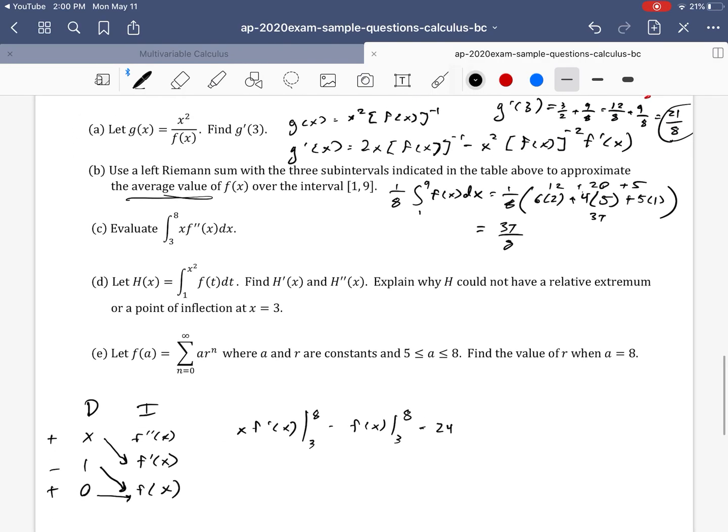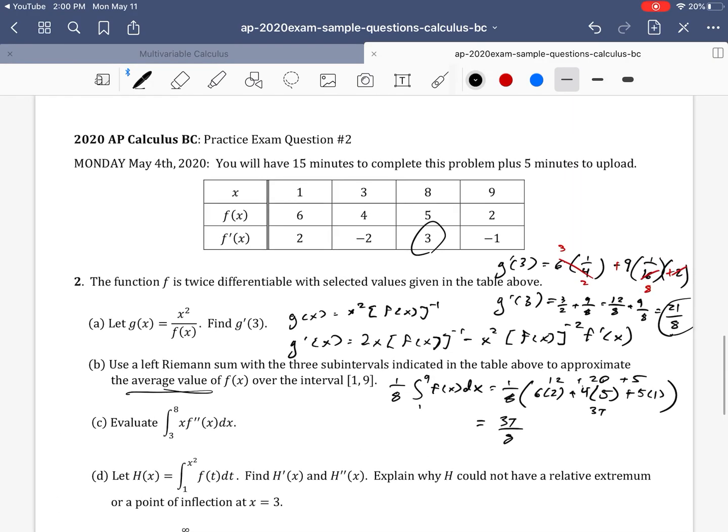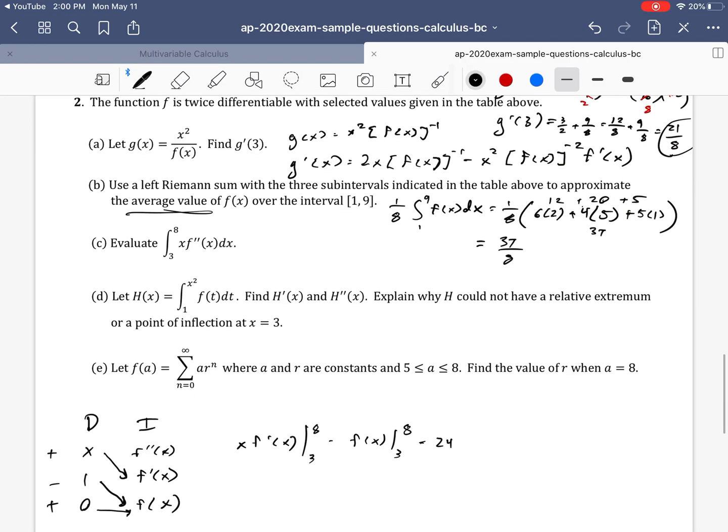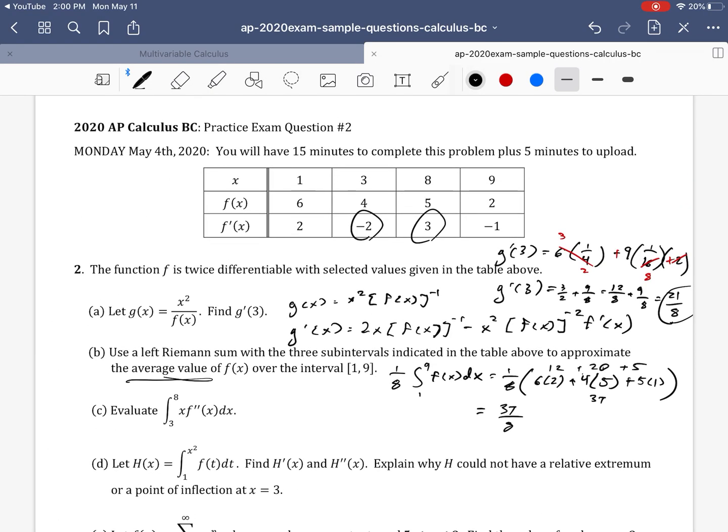So 8 times f prime of 8. f prime of 8 is 3. Okay, so 24. Oh, did I, did I do it right? 24 minus 3 times f prime of 3. Yeah, there's where I messed up. f prime of 3 is negative 2. So we have 12 minus 3 times negative 2. Or in other words, 12 plus 3 times 2. So 12 plus 6 there, that's 30. So I'll just leave it like that.